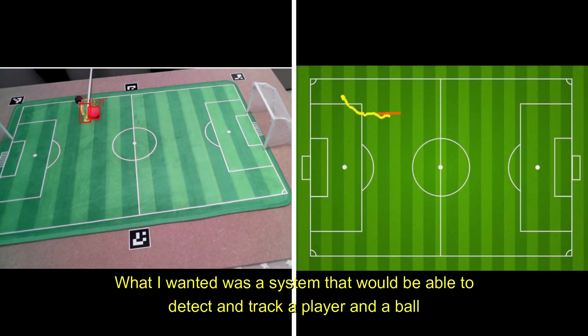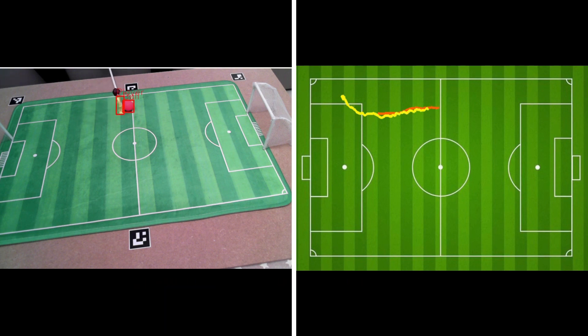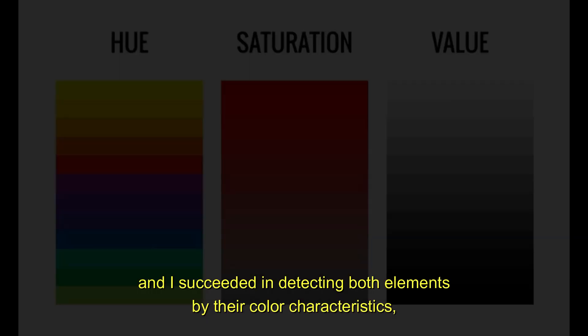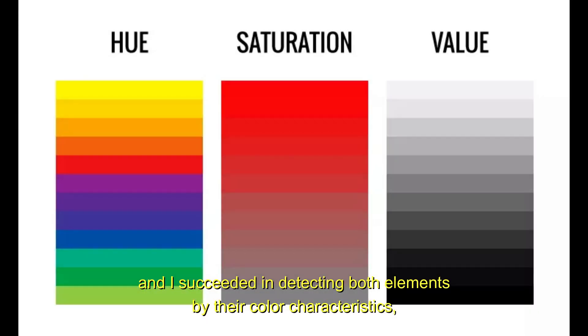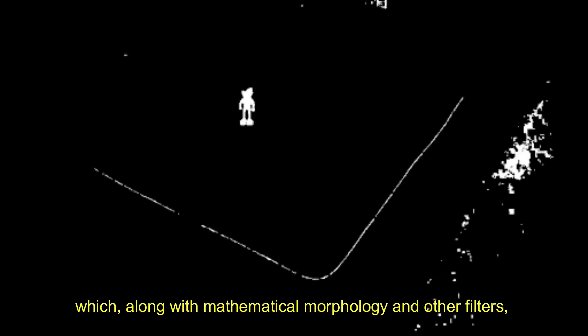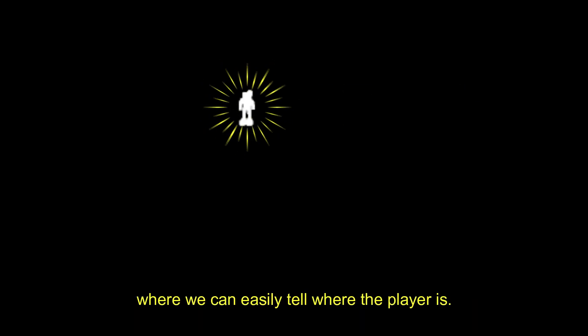What I wanted was a system that would be able to detect and track a player and ball, and I succeeded in detecting both elements by their color characteristics, which, along with mathematical morphology and other filters, achieved this result you can see on the screen, where we can easily tell where the player is.